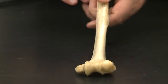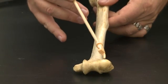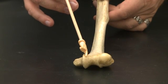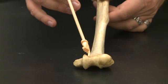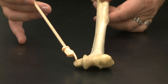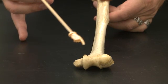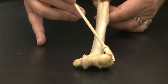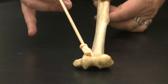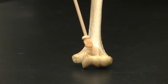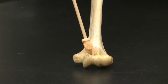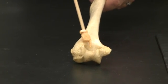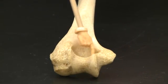On the other end, we have the capitulum and the trochlea. The medial epicondyle, the lateral epicondyle, the coronoid fossa, a little indentation right there. And the olecranon fossa is a large indentation in the rear.